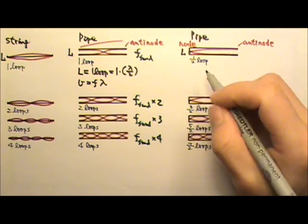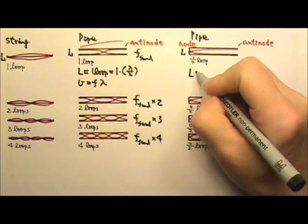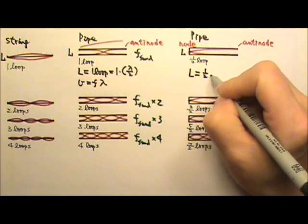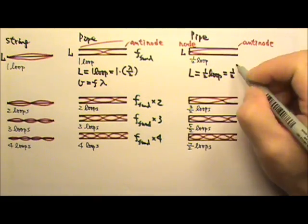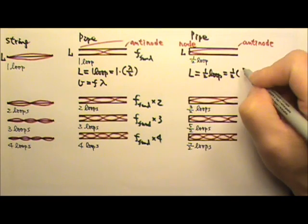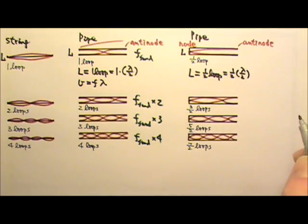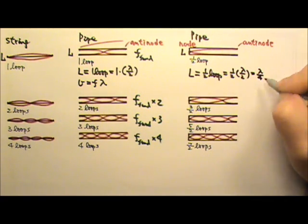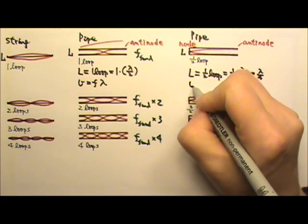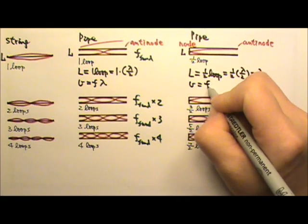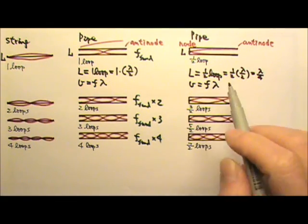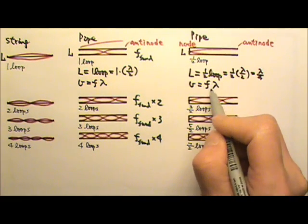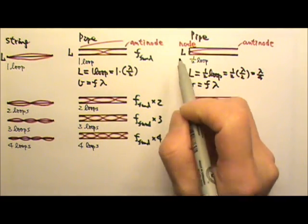For the pipe with the one end closed, we can start with L. In this length, L, there is half a loop. That means one loop can be replaced with half a wavelength. So the length of L equals to 1 fourth lambda. And then we can write V equals to frequency times the wavelength. So combining these two, we'll get the relationship between the fundamental frequency and the length of the pipe.